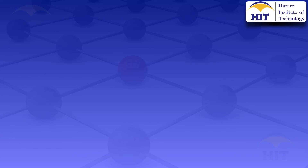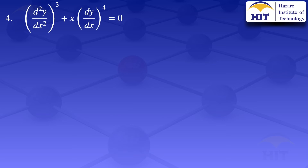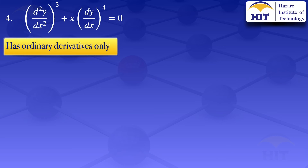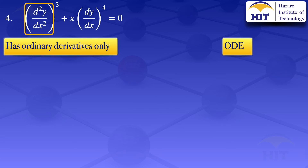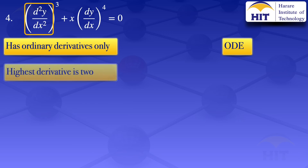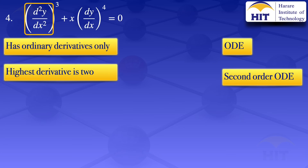Moving on to the last one, question number 4: the second derivative of y with respect to x raised to the power 3, plus x multiplied by the derivative of y with respect to x raised to the power 4, equals zero. We have only ordinary derivatives, therefore the equation is an ordinary differential equation. The highest derivative is 2, therefore this is a second order ordinary differential equation.